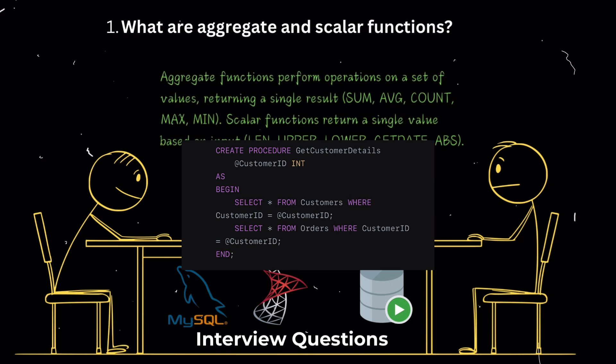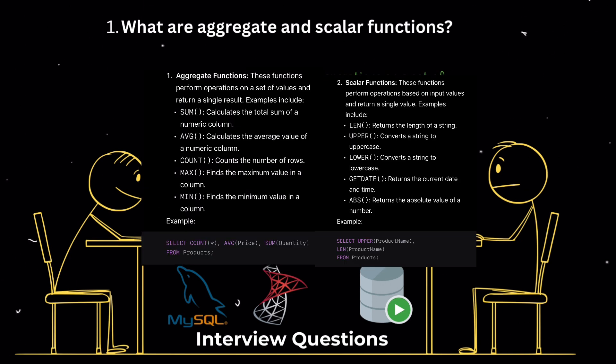What are aggregate and scalar functions? SQL has built-in functions categorized into aggregate and scalar functions. Aggregate functions. These functions perform operations on a set of values and return a single result. Examples include sum, calculates the total sum of a numeric column. AVG, calculates the average value of a numeric column. Count, counts the number of rows. Max, finds the maximum value in a column. Min, finds the minimum value in a column.